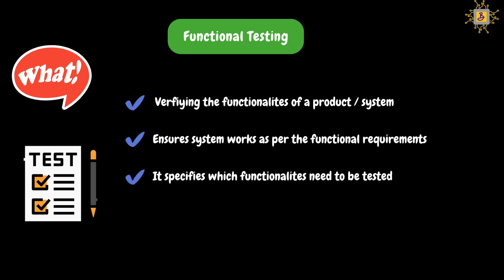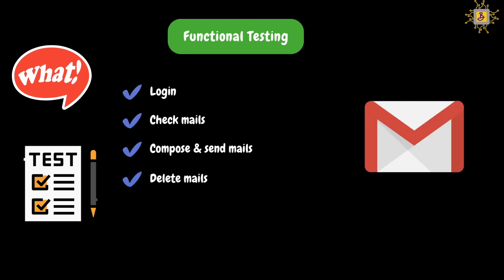Let's take an example of Gmail to understand functional testing. Let's assume we have four functionalities: login, check mails, compose and send mails, and delete mails. In the login functionality, if we give the right username and password combination, the application should allow us to login. If a wrong combination is given, it should not allow the user to login. So in functional testing, we will verify if the login functionality is working as per our requirement.